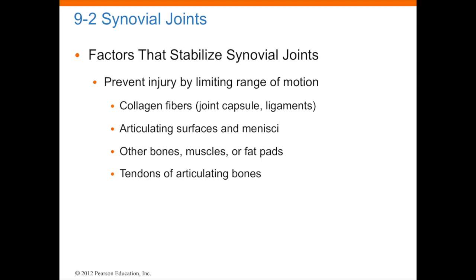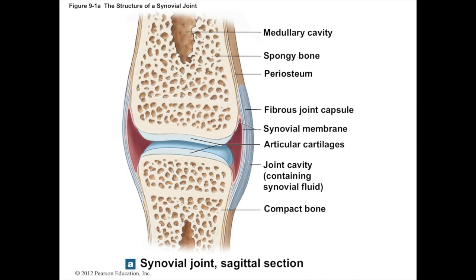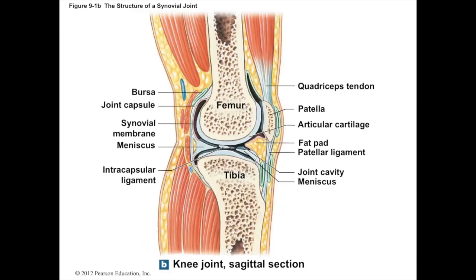Factors that stabilize synovial joints: you can prevent injury by limiting the range of motion. Collagen fibers, the articulating surface of the meniscus, and other bones, muscles, or fat pads help to stabilize these synovial joints. This is the synovial joint — a sagittal section — and you can see in the middle where the synovial membranes are, along with cartilages that help smooth out the contact between these bones. This is a sagittal view of the knee joint, which shows where the meniscus is located to absorb shock. You can also see where the patella tracks in front of the anterior knee, and the fat pad helps absorb shock to assist the meniscus as well.